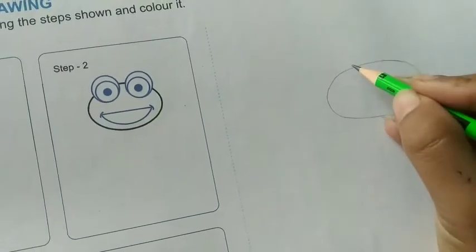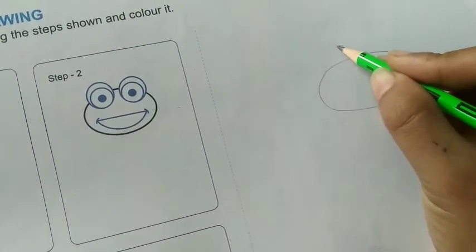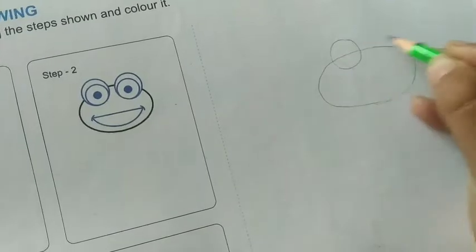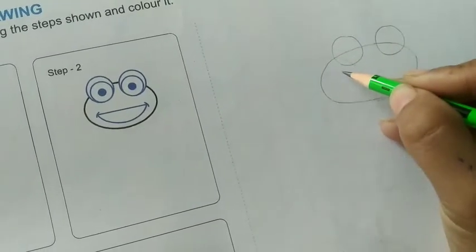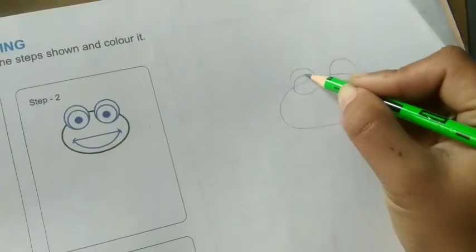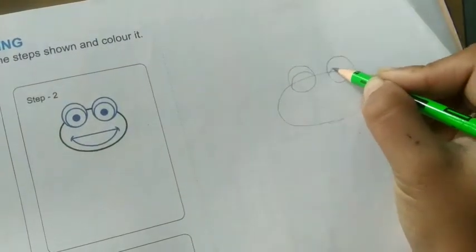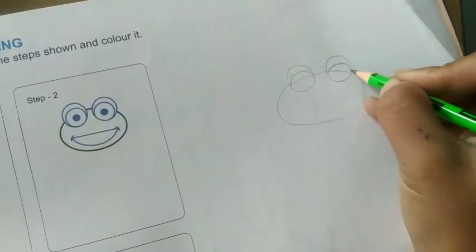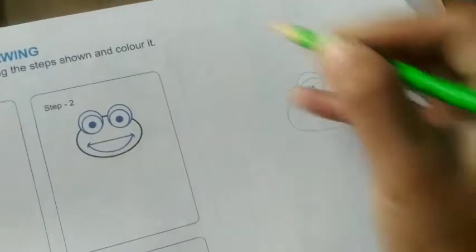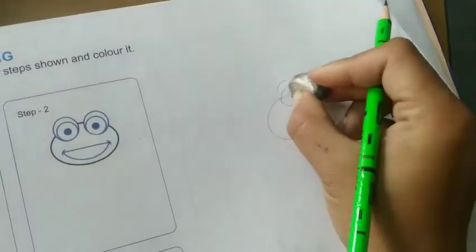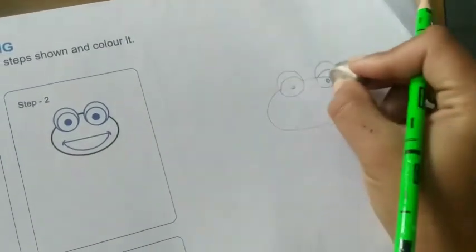Then second step, we have to make its eyes and mouth. Make a circle in between this oval in this frog and rub this part, inside part you have to rub.